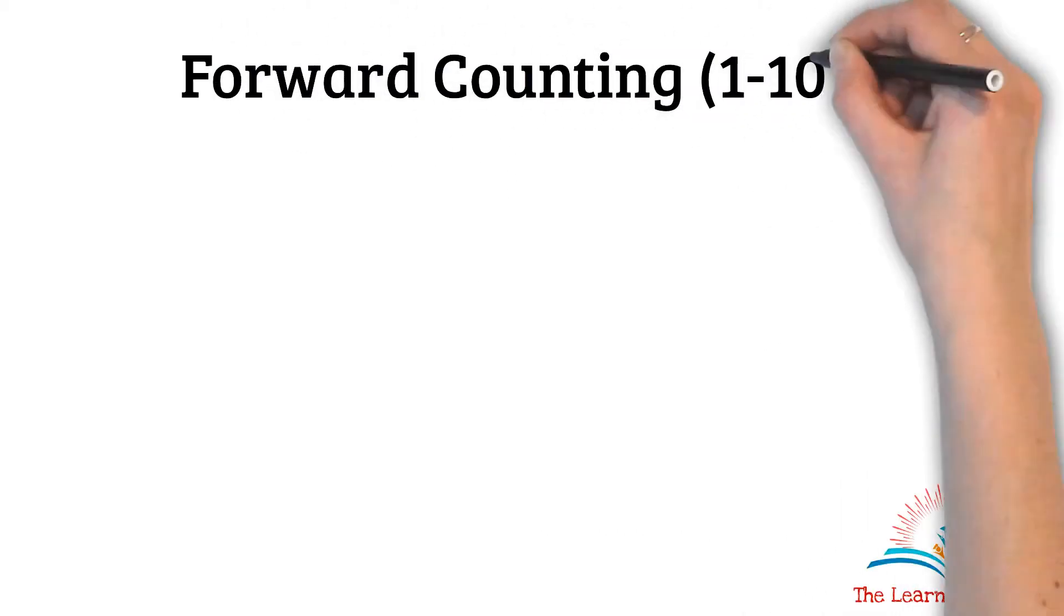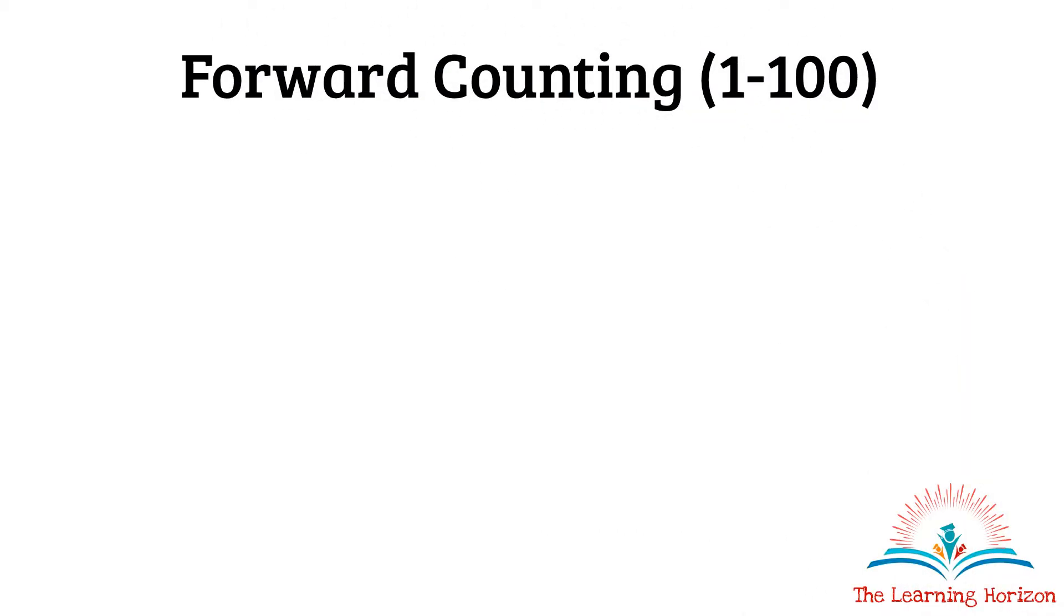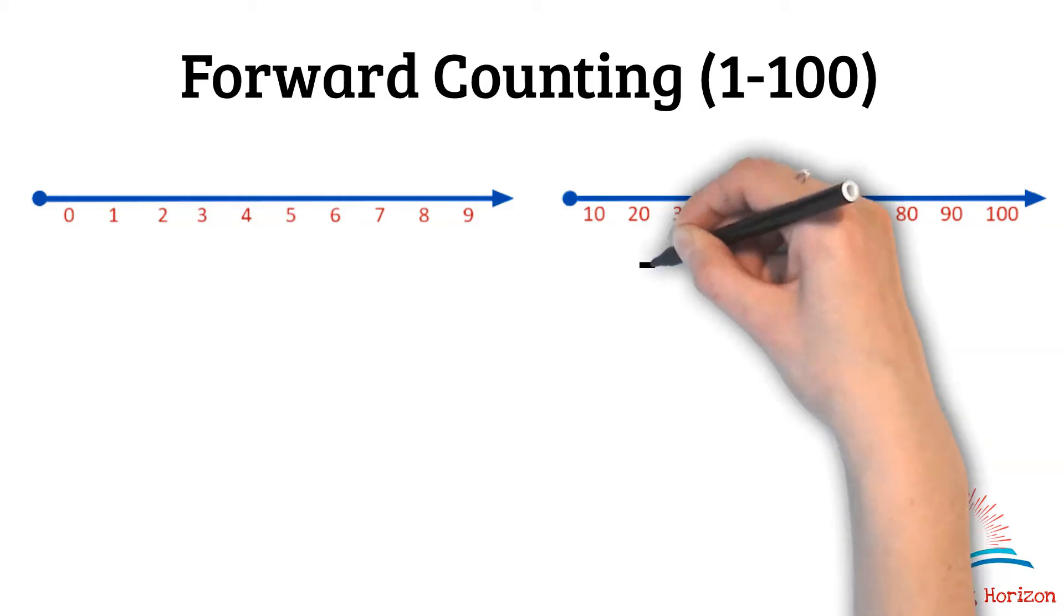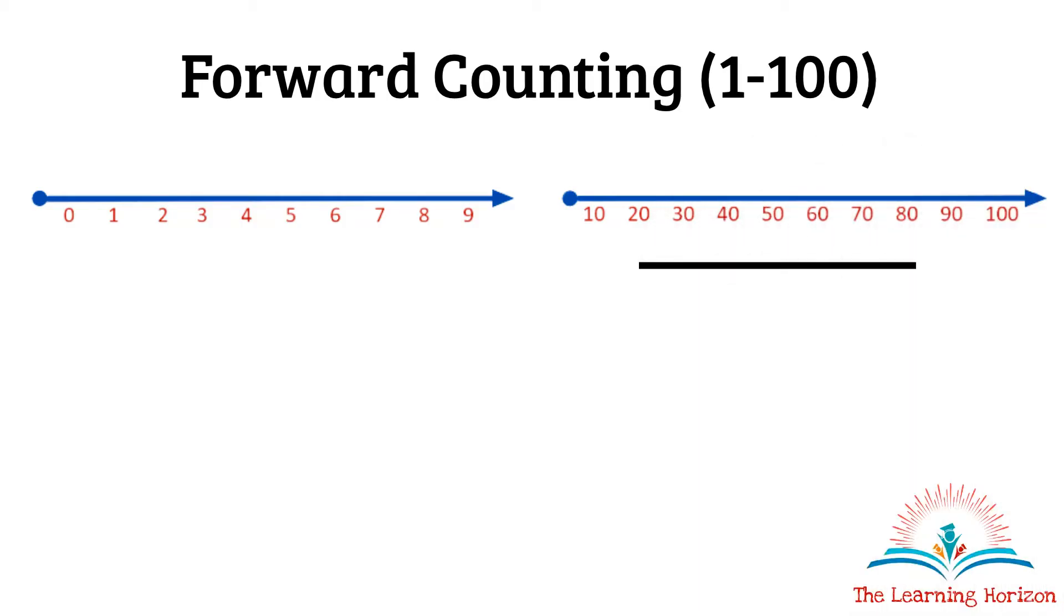Let us now understand counting from 1 to 100. We will have two number lines. First, a number line with all the digits that is 0 to 9 and another number line with the numbers counting in tens that is 10, 20, 30 and so on until 100.